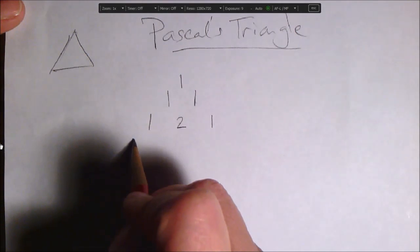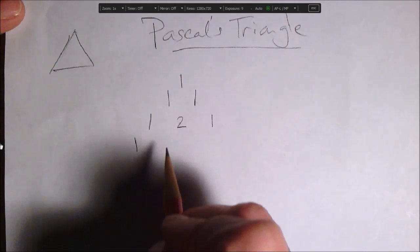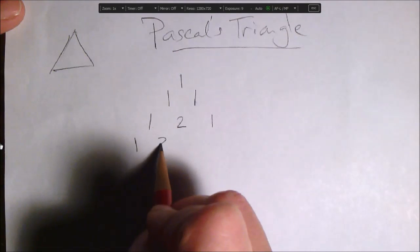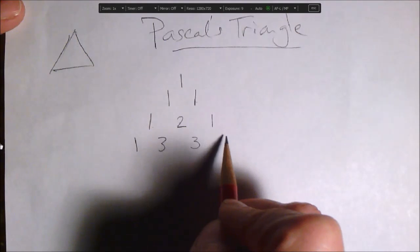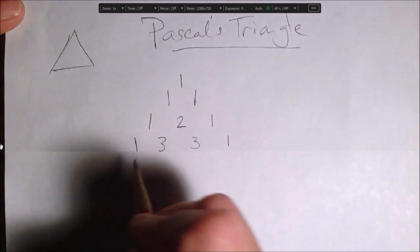Okay, so third, so this is, the next line is, starts with a one, and now we add these two to get three. We add these two to get three, and on the end is a one.